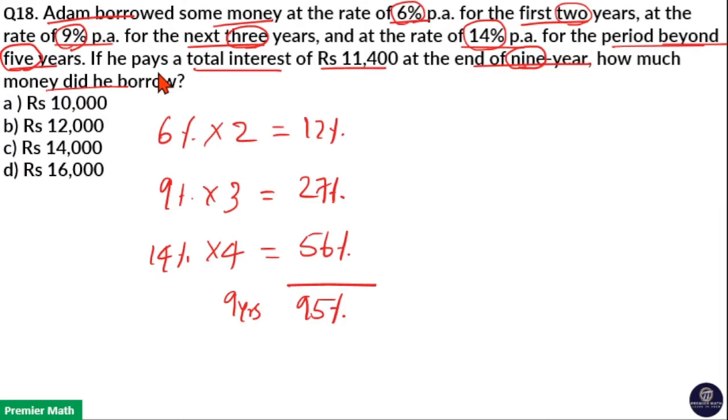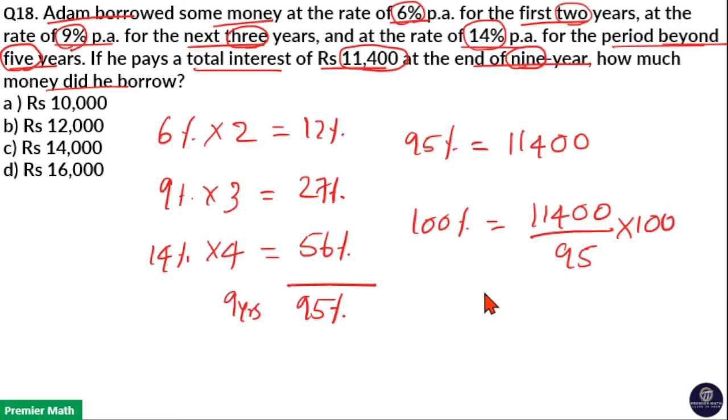And this 95% is equal to 11,400 because he paid total interest of 11,400. So this 95% is the total interest which is equal to 11,400. Now we have to find the principle. Principle is 100%, that is the sum. If 95% is 11,400, then 100% is 11,400 divided by 95 into 100.